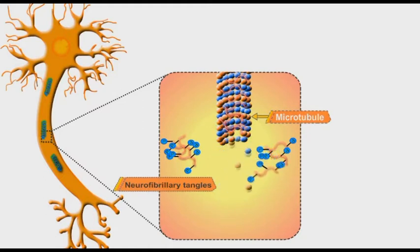The hyperphosphorylated tau protein aggregates to form new pathological structures called neurofibrillary tangles which distribute throughout the nerve cells.